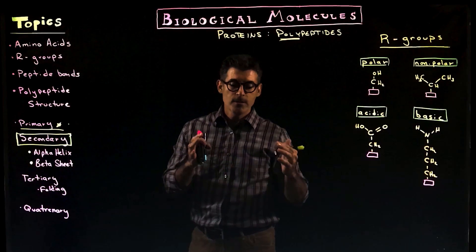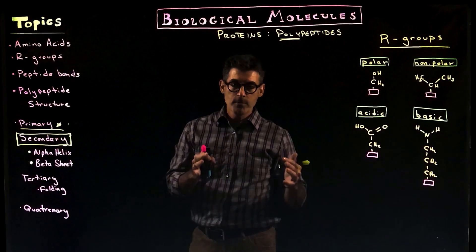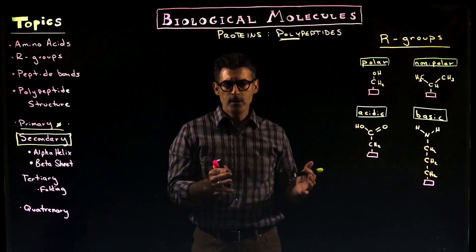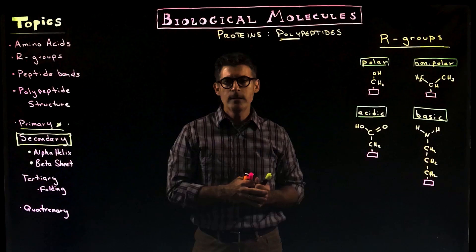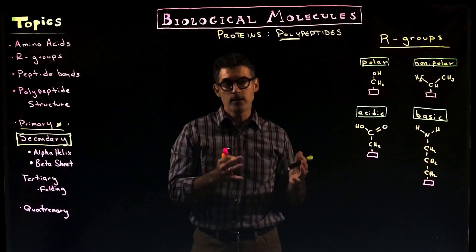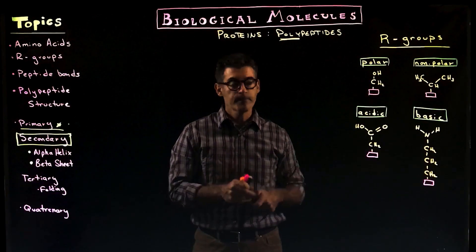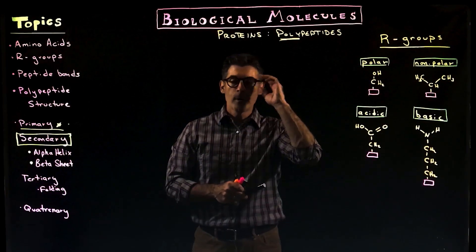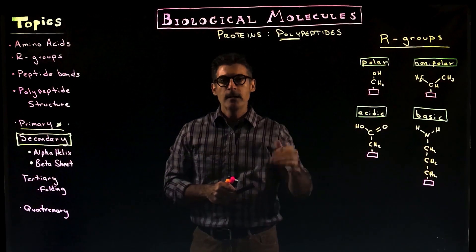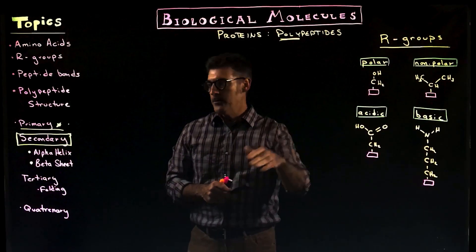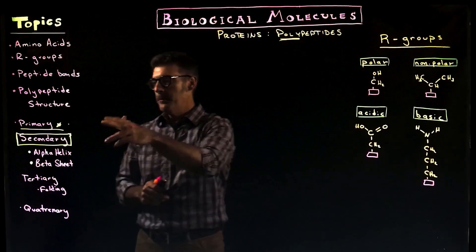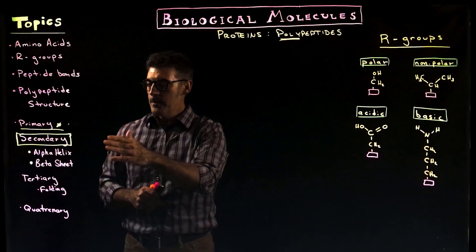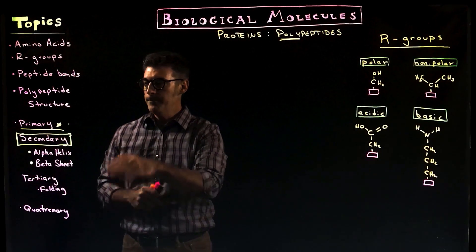To understand what proteins are and what they do in the cell, we need to understand a little bit about their actual structure. We're going to break down protein structure into different levels: primary structure, secondary structure, tertiary, and quaternary.